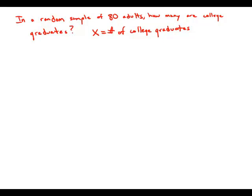In a random sample of 80 adults, how many are college graduates? I'll use x to equal what we're looking for, the number of college graduates. Notice that if x is the number of college graduates, then 80 minus x would be the number of people who are not college graduates. This one variable allows us to derive expressions for both the number of college graduates and the number of people who are not college graduates.